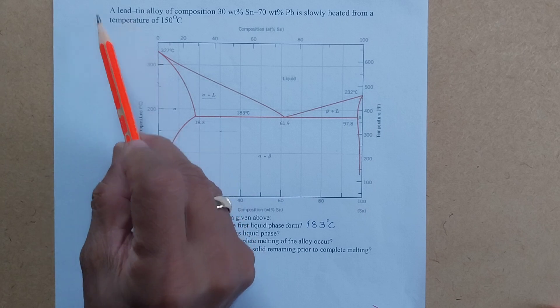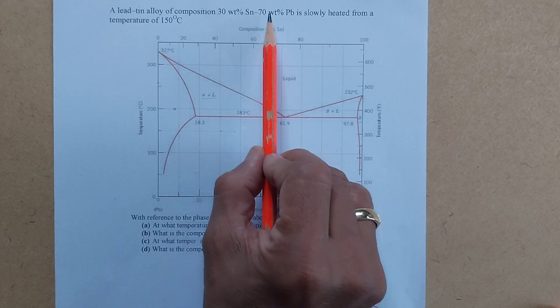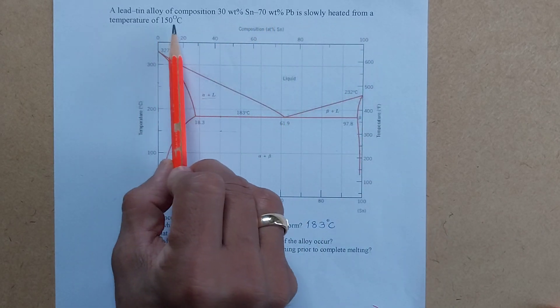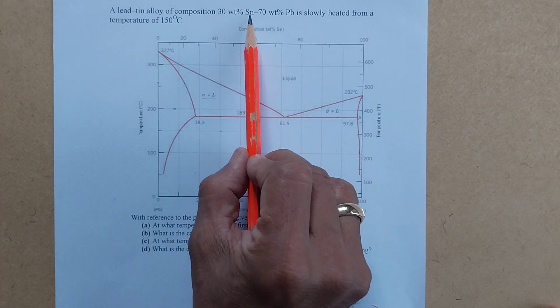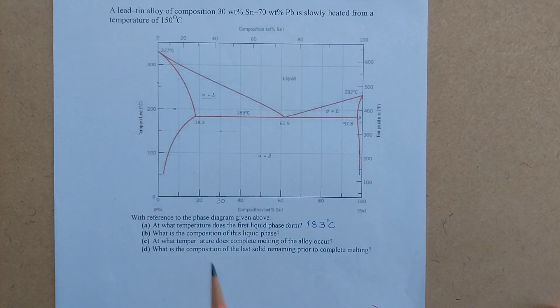The question here says a lead tin alloy of composition 30 weight percent SN, 70 weight percent PB is slowly heated from a temperature of 150 degrees Celsius. Now the SN here means tin and the PB meaning plumbum is lead. We are talking about a lead tin phase diagram.